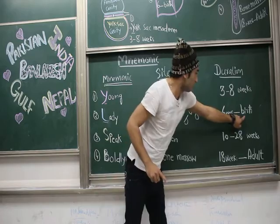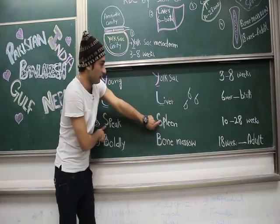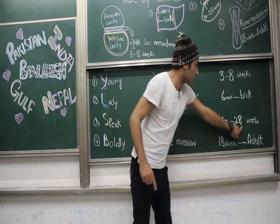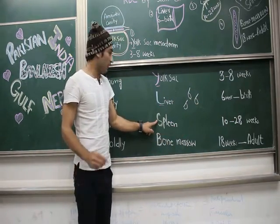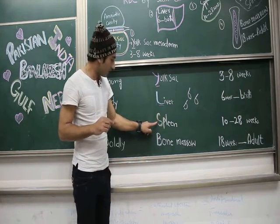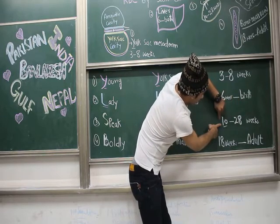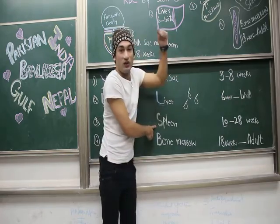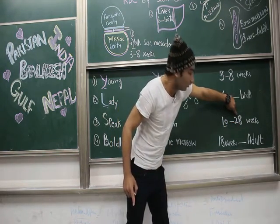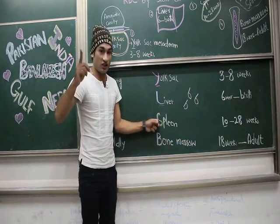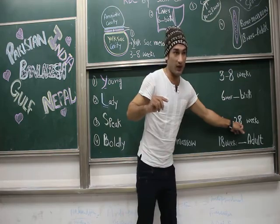From 'S' in Speak you remember Spleen. The duration is from ten to twenty-eight weeks. In Chinese, 'S' sounds like 'shi', meaning ten — so from ten weeks. Then notice that two plus eight also equals ten, so the end point is twenty-eight weeks. That is how you remember: spleen, ten weeks to twenty-eight weeks.